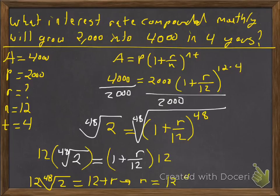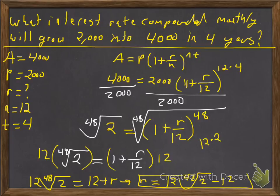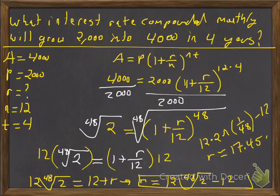And then what we're going to do is we're just going to subtract 12 from both sides. So we'll have 12 times the 48th root of 2 minus 12. And if I want to put that in my calculator, it's going to be 12 times 2 raised to the 1 over 48th power minus 12. And we'll put that in the calculator. And that's going to be approximately 17.45%. So pretty good interest rate there.